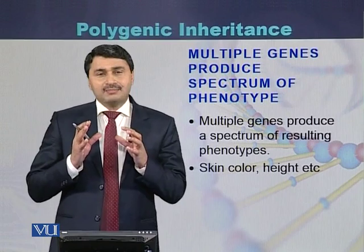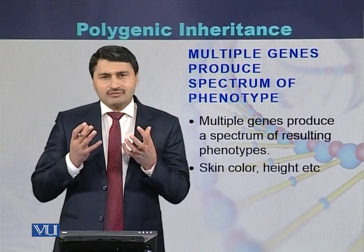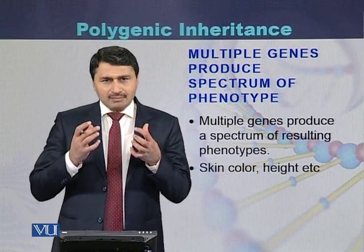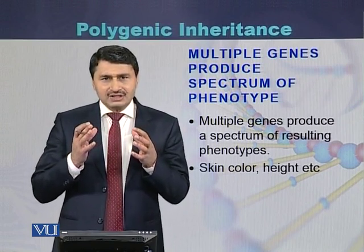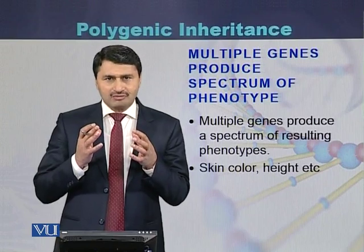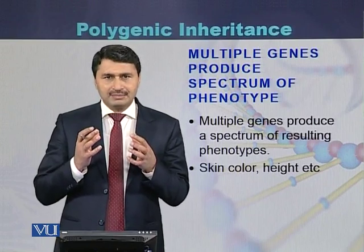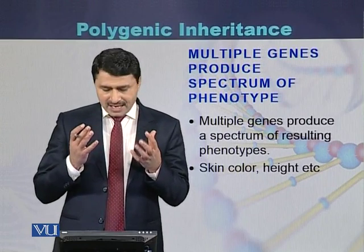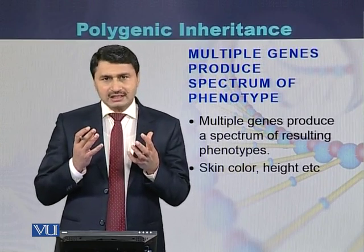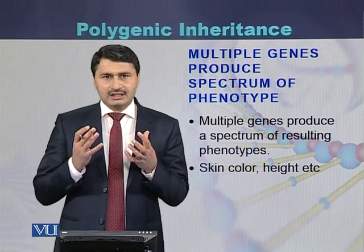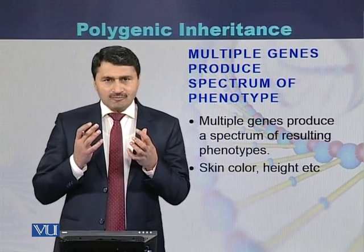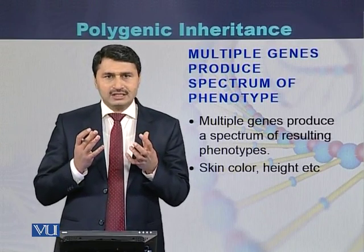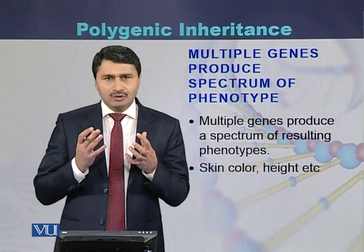Multiple genes can produce a spectrum of mutations because different or multiple genes have a certain effect on the production of traits or phenotype. Taking the example of polygenic inheritance, the best examples would be skin color in humans or eye color in humans, because more than one gene contributes for the skin color in humans, and the same is with other polygenic traits.